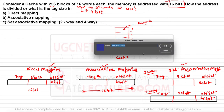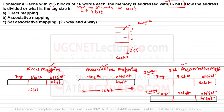With associative mapping, the problem is immediately solved by subtracting the offset from the total address size. The total address is 16 bits, and 4 bits are used for the offset, leaving 12 bits. Therefore, in case of associative mapping, the tag is 12 bits.